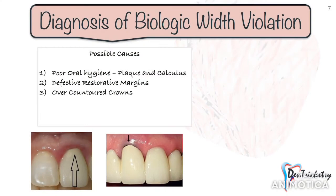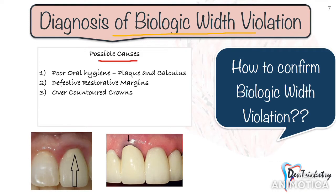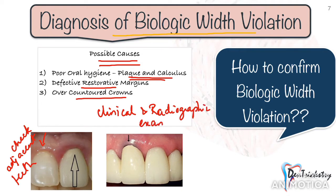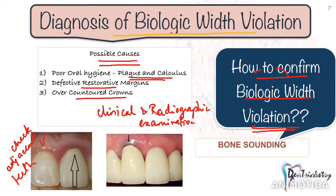How will you diagnose that inflammation around your restoration is because the margins have been placed too deep, violating the attachment? The first thought is excess plaque and calculus or lack of oral hygiene, but you can rule this out by checking if there is inflammation on the adjacent teeth as well — if not, that is probably not the cause. Other reasons include defective restorative margins or over-contoured crowns, and clinical and radiographic examination will help eliminate these causes. Ultimately you will have to replace the crowns, so the question remains: how can we be sure that margin location is the main problem?